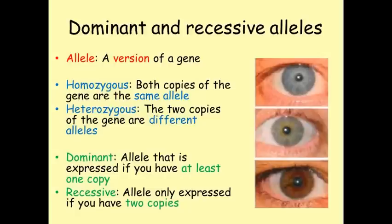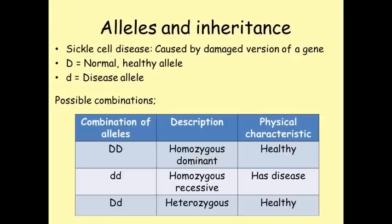Let's imagine a gene with two possible alleles. Sickle cell disease is caused by a recessive allele of a gene. We use a capital D to represent the normal dominant allele, and a small d to represent the allele that can cause the disease. If everyone has two copies of each gene, there are three possible combinations of alleles. They could be homozygous dominant — two copies of the normal healthy gene, DD. They could be homozygous recessive — two copies of the disease-causing allele, dd. Or they could be heterozygous, meaning they have one copy of each allele, Dd. What we've just described are the possible genotypes.